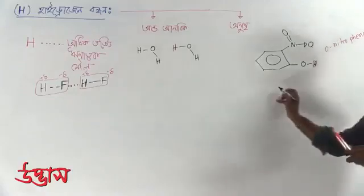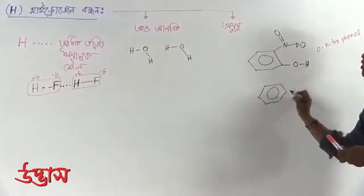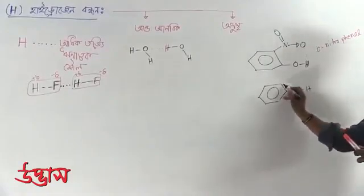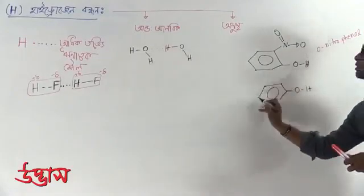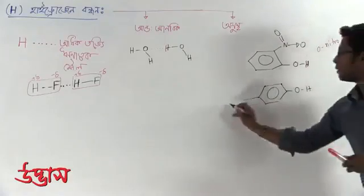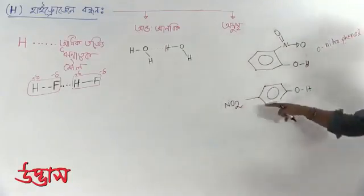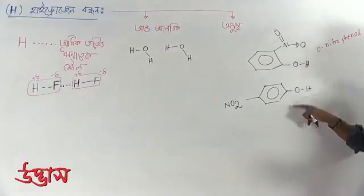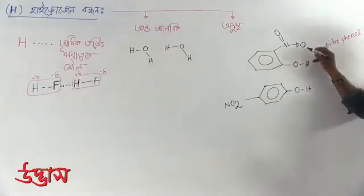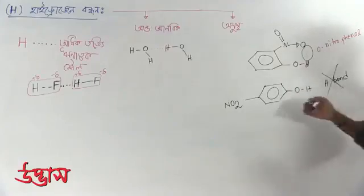But what about para-nitrophenol? In phenol, the O-H is present. The ortho position, meta position, and para position are different substituent locations. In para-nitrophenol, the para position carries the nitro group. For ortho-nitrophenol, we can see that there is an intramolecular hydrogen bond, but in para-nitrophenol, hydrogen bonding occurs intermolecularly.